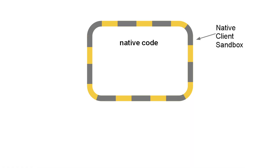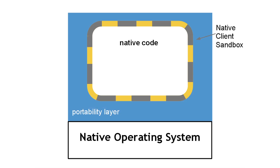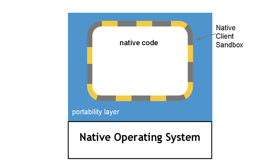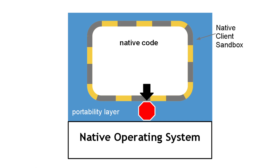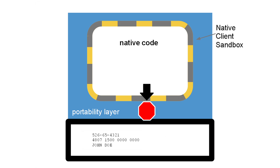A key concept in Native Client is the sandbox, an isolation technique that prevents downloaded code from doing things it's not supposed to. The Native Client sandbox prevents application code from interacting directly with the native operating system. This is crucial for portability — if an app invoked the native OS directly, it couldn't run on other operating systems. It's also essential for security, because the native operating system provides access to resources like your files that need to be protected.